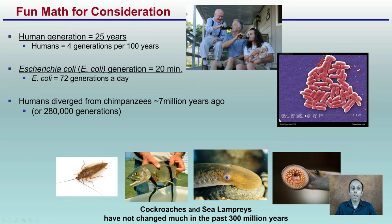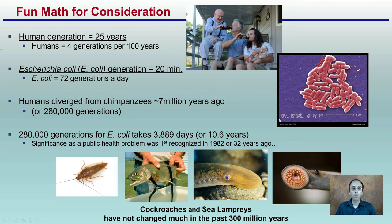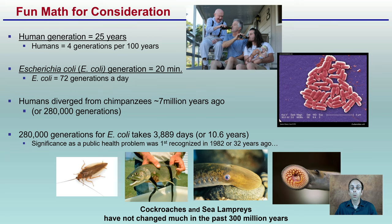Looking at evolution in general — some fun math for consideration. If the human generation time is about 25 years, then over 100 years there will be about four generations. E. coli, by comparison, has a generation time of about 20 minutes, meaning E. coli can have essentially 72 generations in a single 24-hour period. Humans diverged from chimpanzees an estimated 7 million years ago, equating to about 280,000 human generations. For E. coli to go through that same time period would only take about 3,800 days — a little over 10 and a half years. E. coli has been a significant public health problem since 1982, about 32 years ago, which is interesting when considering how rates of evolution may change.